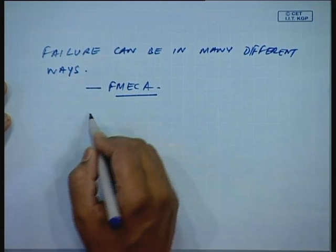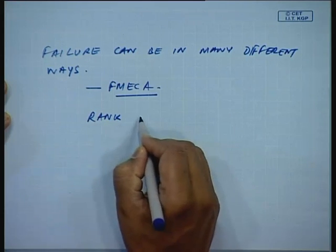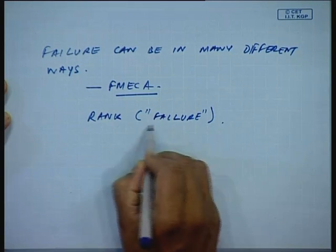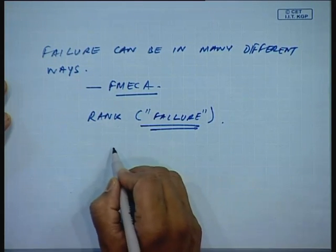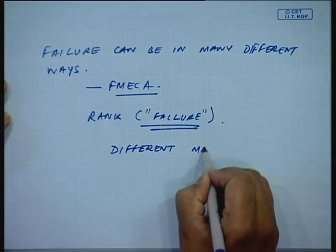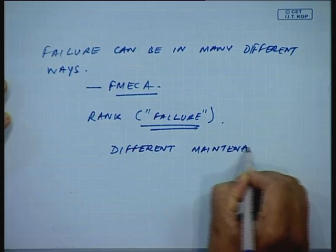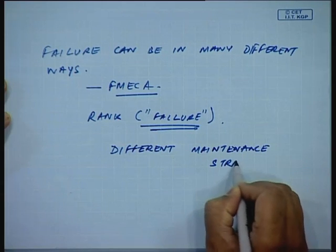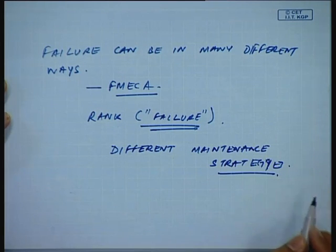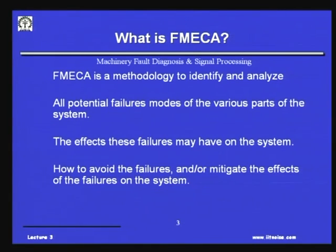By deciding on criticality, we can rank the failures — within quotes. Once we have ranked the failures, we can use different maintenance strategies. We will see how failures have different effects on the system and how we can mitigate the effects of failure on the system.